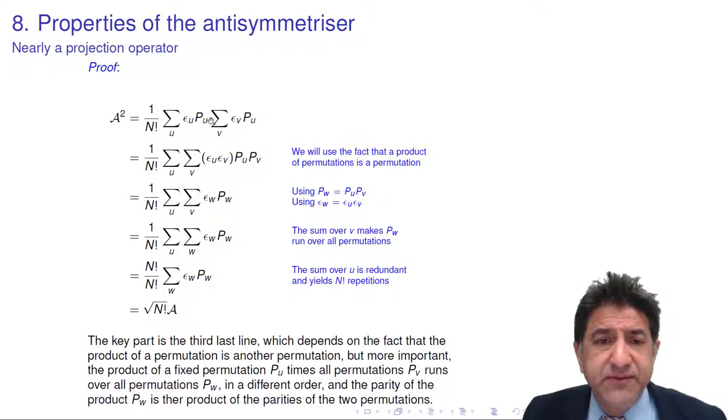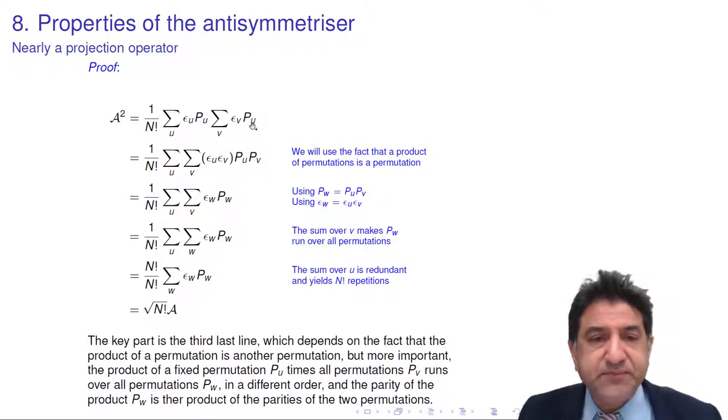Here we have the first antisymmetrizer, summed over all permutations pu, and the second antisymmetrizer, summed over all permutations pv. And that is a typographical error there too. So that's fine. We have a double sum.